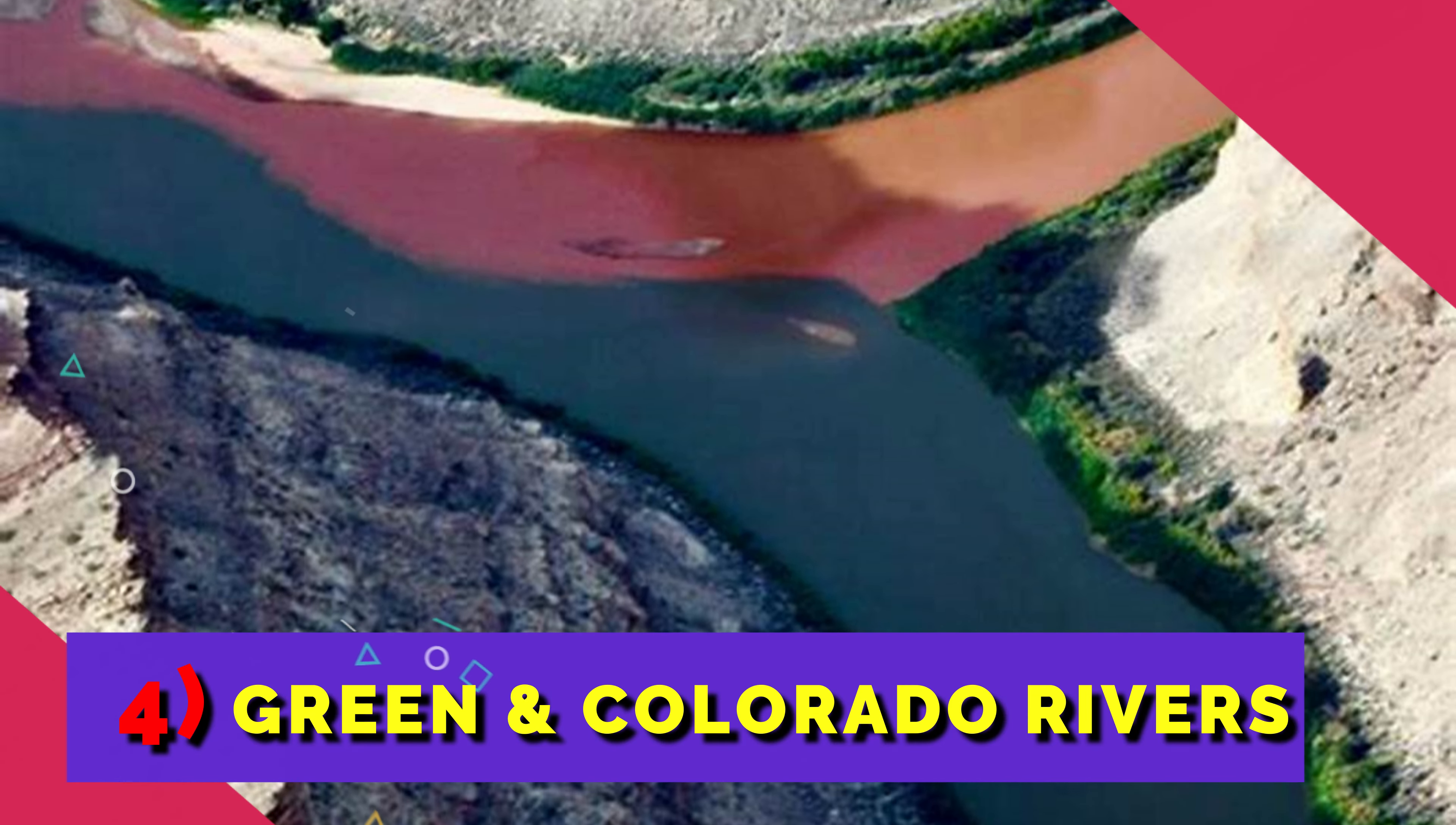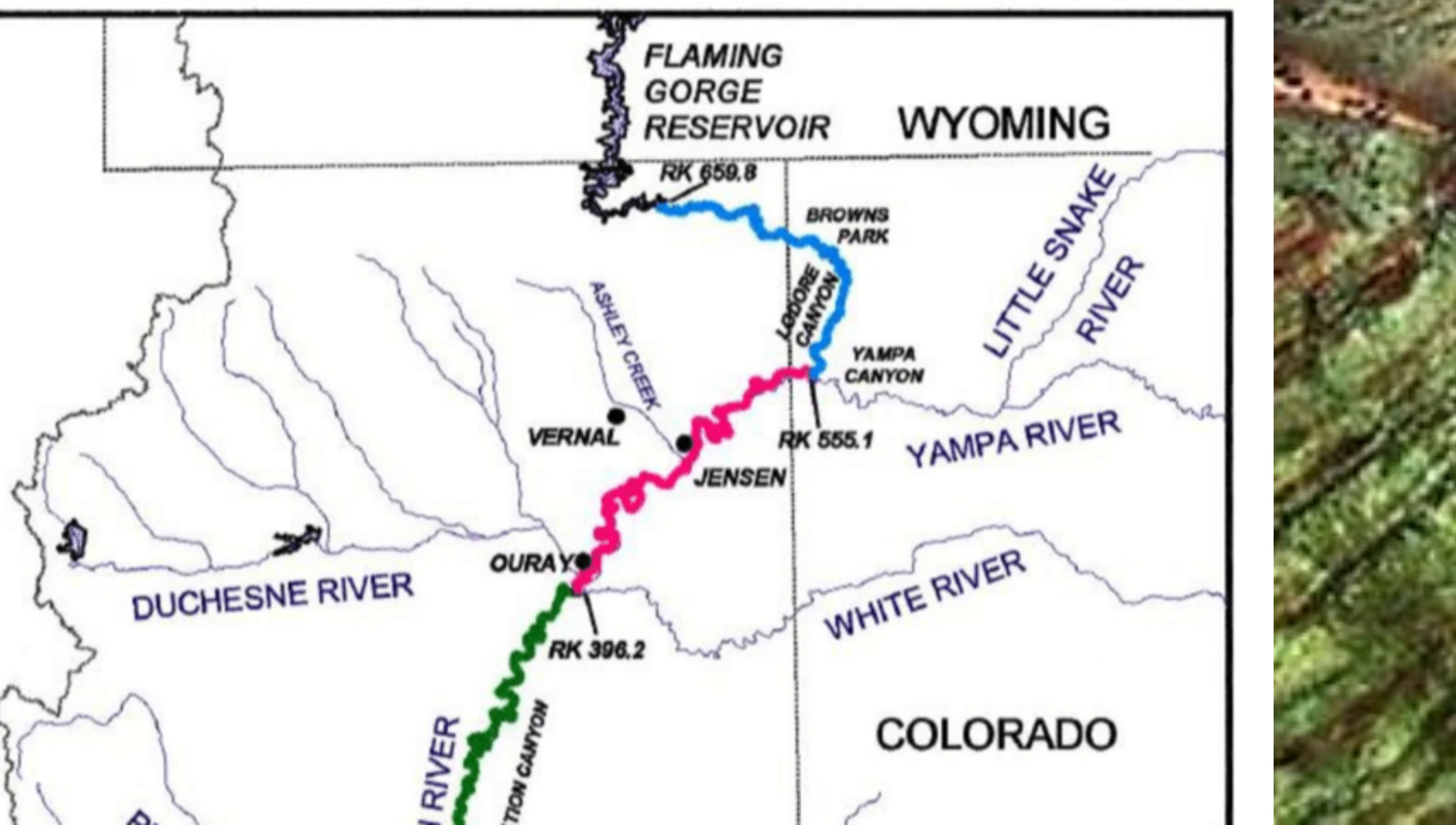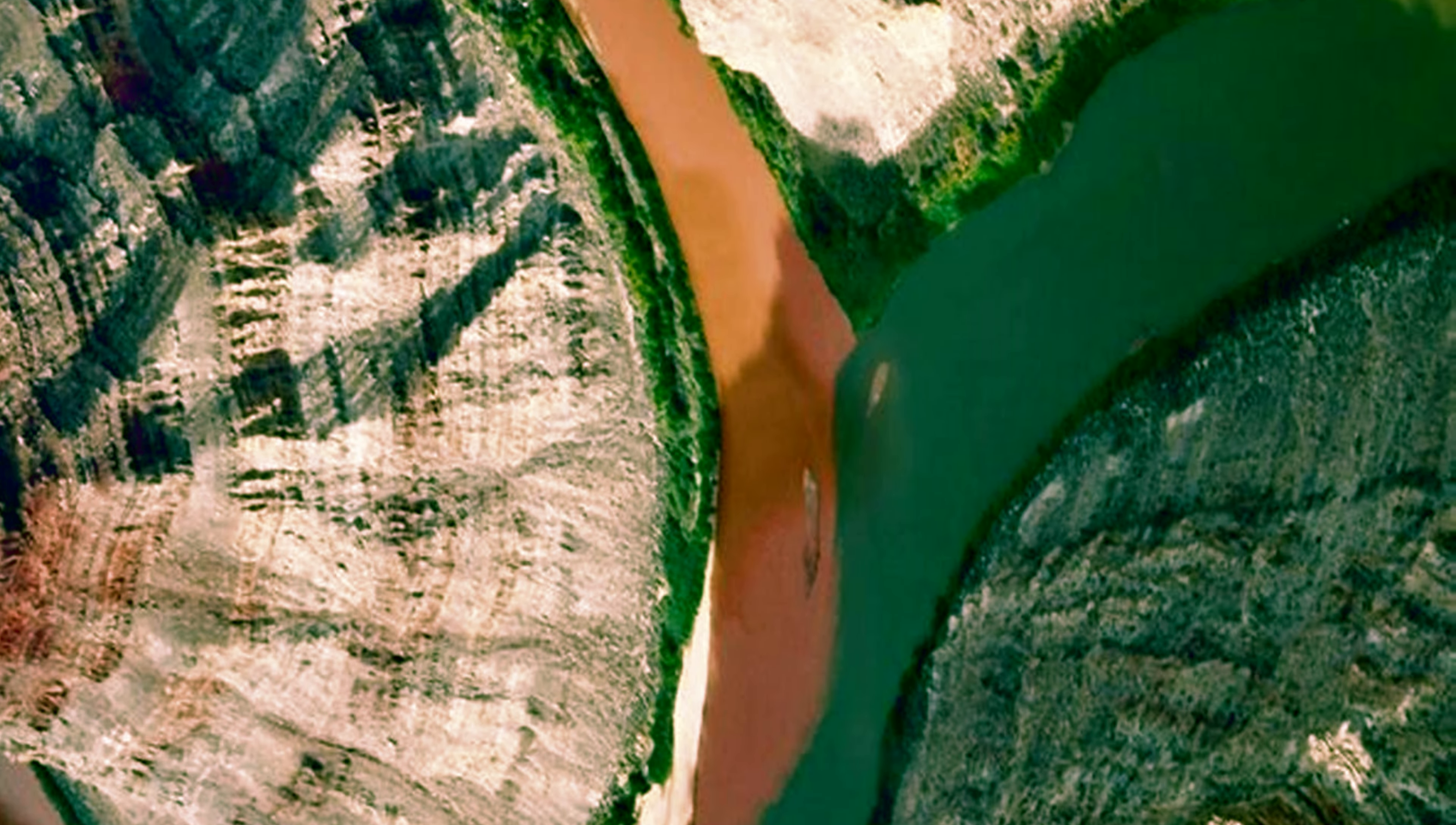Number four: the Green and Colorado rivers. The place of their junction is Canyonlands National Park in Utah, USA. Colorado is brown and Green is green. The corridors of these rivers go through rocks with different chemical makeup. That's why they have such a big contrast of colors.